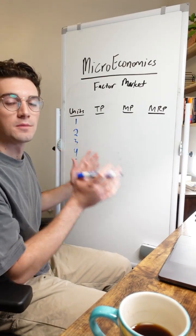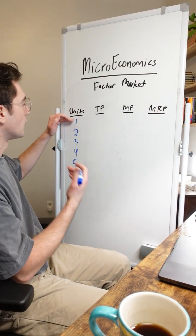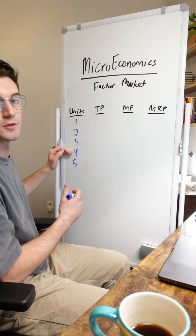Let's assume that we're working with machinery here, or capital. So this is us having one machine, two machines, three machines, four machines, five machines.